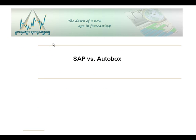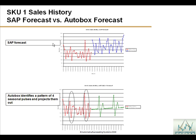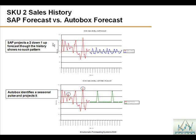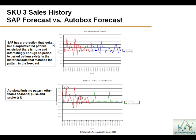Now let's compare AutoBox versus SAP. The SAP forecast on top looks interesting but is nowhere near the mean. AutoBox identifies a pattern — roughly every four periods there seems to be an up-down-middle-up effect. SAP shows a two-down, one-up forecast that AutoBox does not find in the statistics of the data set. AutoBox additionally finds a seasonal pulse and forecasts it, while the SAP forecast does not match what's in the data.